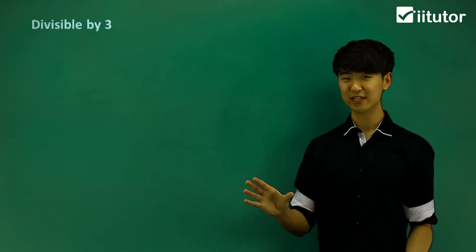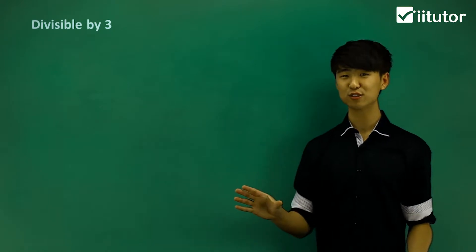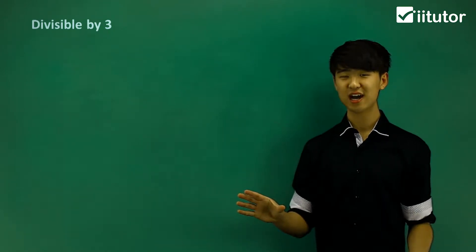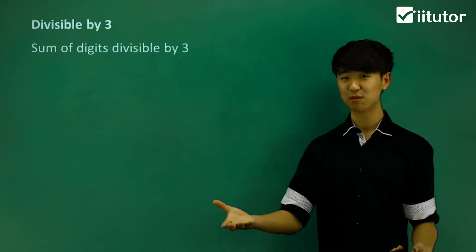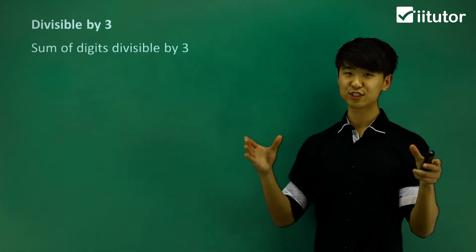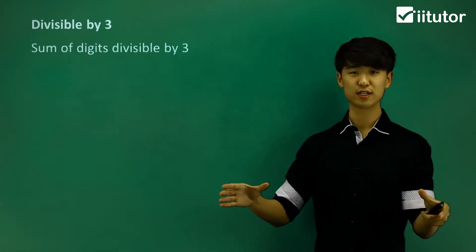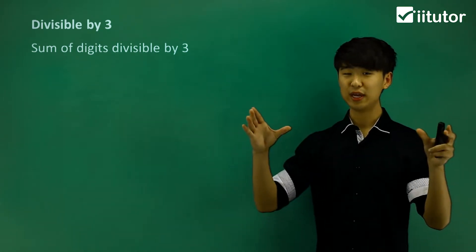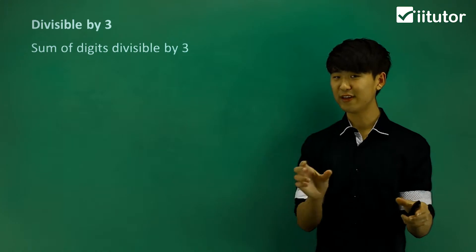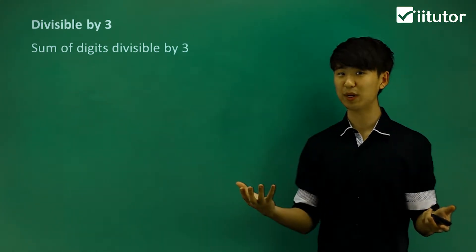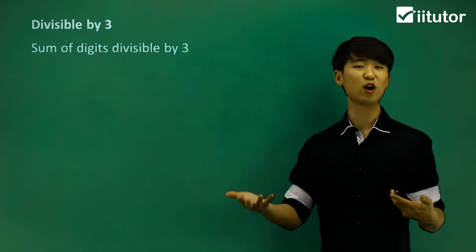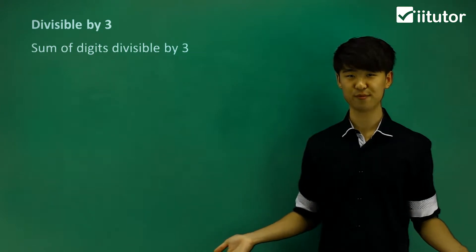Numbers that are divisible by 3 have a little technique that we can use. One trick about numbers divisible by 3 is we look at the sum of the digits. If we have some number, we take the sum of the digits of that number, and if that sum is divisible by 3, then the whole number is also divisible by 3.